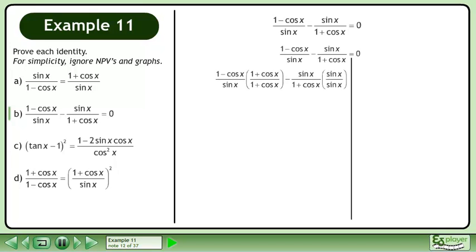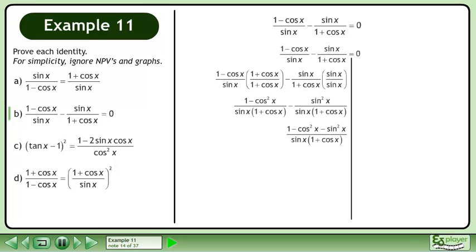Get a common denominator. Simplify. Subtract the fractions. Factor out negative 1 from the Pythagorean identity in the numerator. Cos²x plus sin²x equals 1.